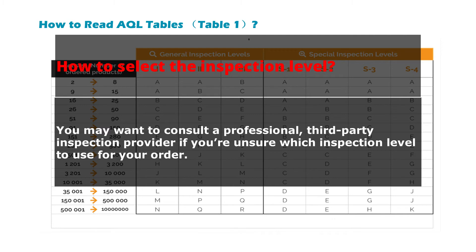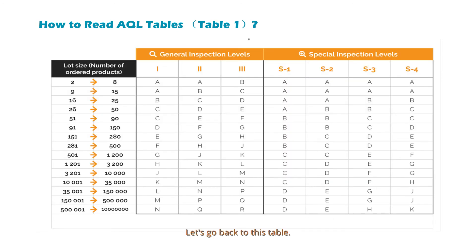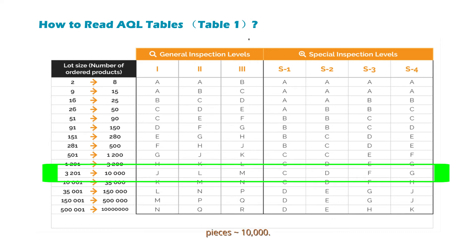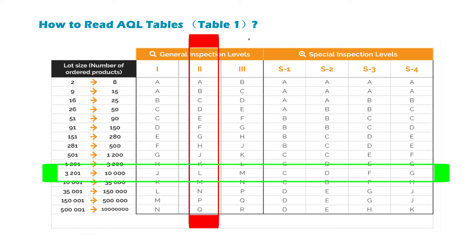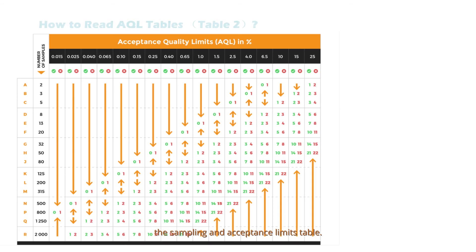In this video, as an example, we will use G2 for our inspection level. So let's go back to the first table. With our assumed lot size between 3,201 and 10,000 pieces, and an inspection level of 2, the corresponding code letter is L. Once you know your code letter, we can move to the second table — the sampling and acceptance limits table.